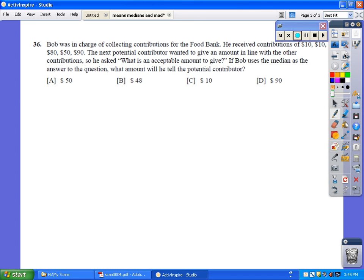Last one. Put it into a word problem, but let's pick out what they're asking for. This guy was in charge of collecting contributions for the food bank. Received contributions of $10, $10, $80, $50, and $90. So we're only dealing with a few numbers. The next potential contributor wanted to give an amount in line with the other contributions, so we ask, what's an acceptable amount to give? If Bob uses the median as the answer to the question, what amount will he tell the potential contributor? Median, of course, as we talked about, the road - it's the number that's right down the middle.